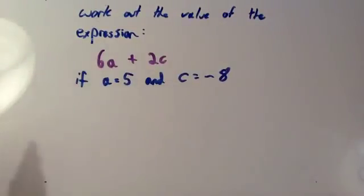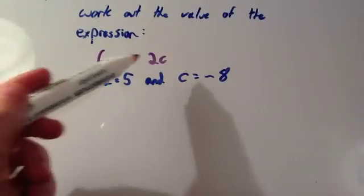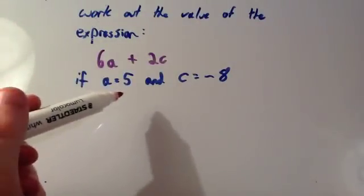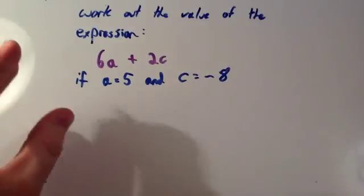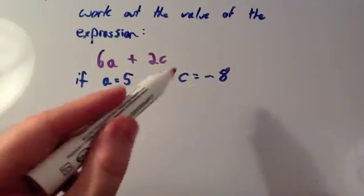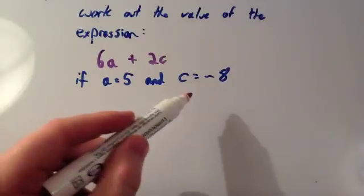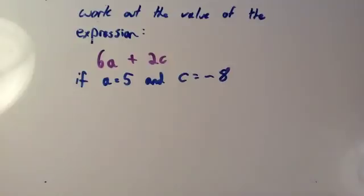Okay, we're going to look at another exam question now. It says, work out the value of the expression 6a plus 2c if a equals 5 and c equals negative 8. Now, they love in substitution questions to put in negative numbers. Have a look at atoms subtracting with negative numbers now to have a look and see how to deal with some of the stuff that we're going to be doing in this example.